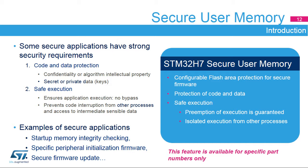Some secure applications require data and code protection as well as safe execution. Examples of such secure applications are secure firmware update or user secure boot with specific startup procedures. These applications may manipulate secret data such as cryptographic keys, and their execution must not be interrupted by a malicious process that could access sensitive data. The STM32H7 introduces the secure user memory protection feature that makes it possible to develop such applications.